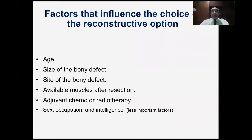How do we choose among these many reconstructive options? There are several factors that influence our choice: the age of the patient, the size and site of the bony defect, and the available muscles after resection — because in order to have a mobile reconstruction we need muscles to move it; if we have to remove all the muscles, we resort to joint fusion. Other factors include the need for adjuvant chemo and radiotherapy, the sex of the patient, the occupation, what the patient needs the reconstruction for, and the intelligence to use sophisticated reconstructive options.